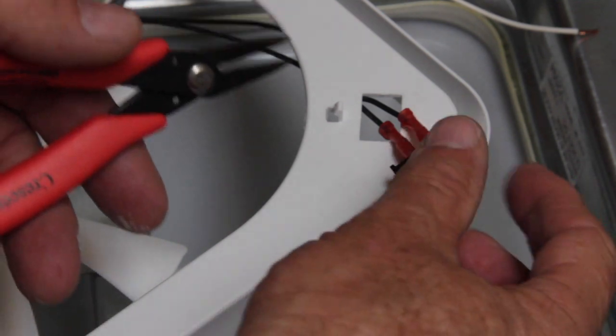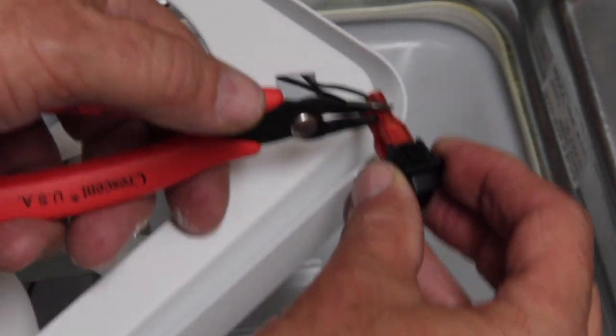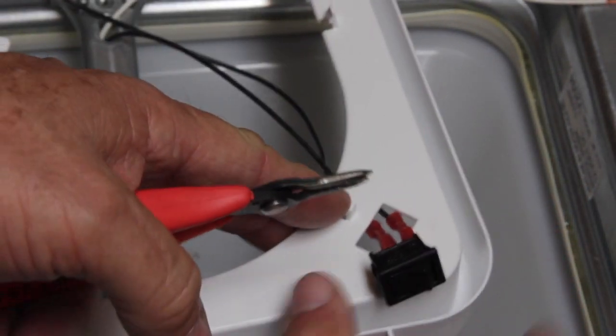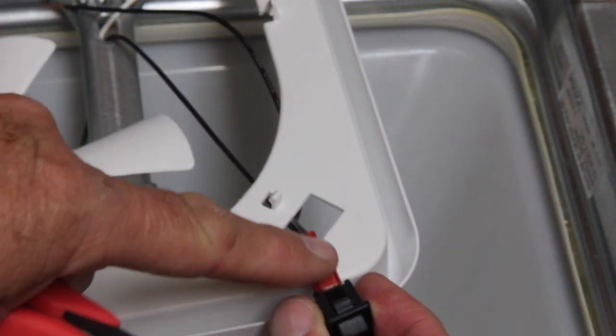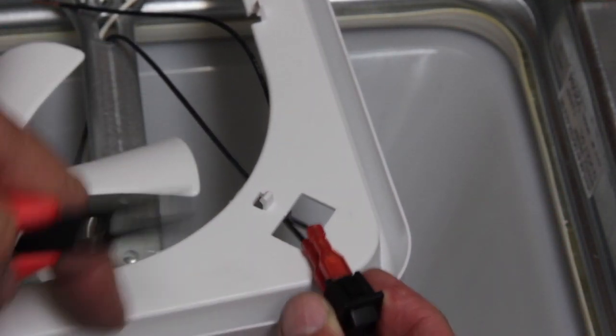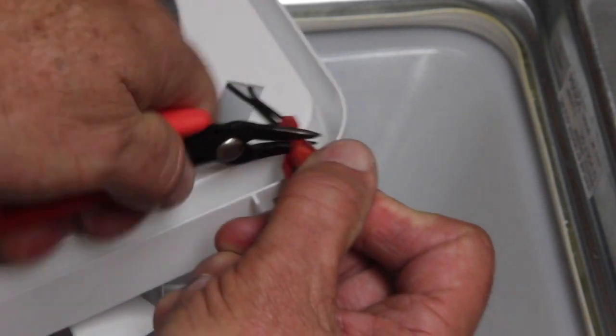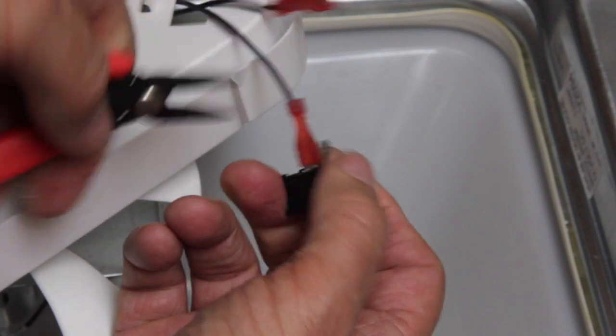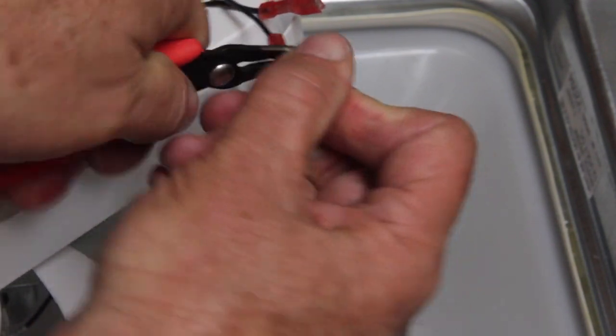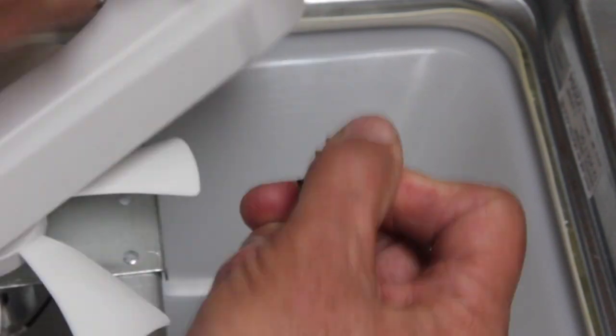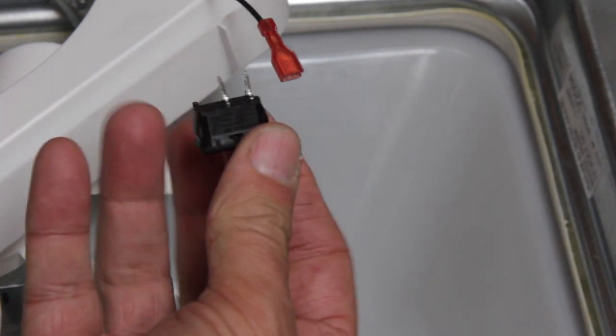Get yourself a pair of needle nose pliers. In this particular fan there's connectors onto the existing switch. What we want to do is remove these connectors, so gently jiggle on the connectors to remove the original switch.